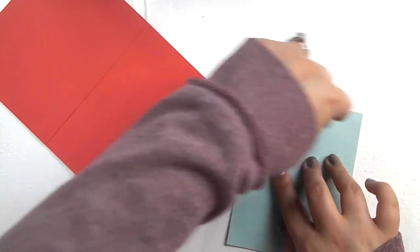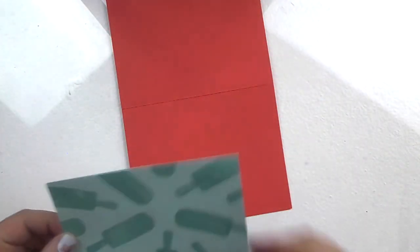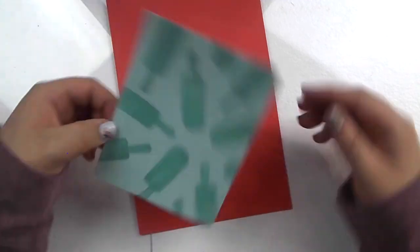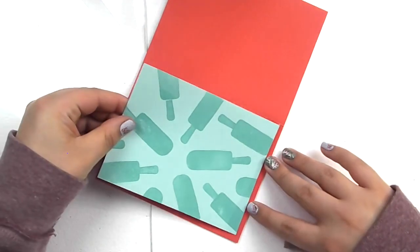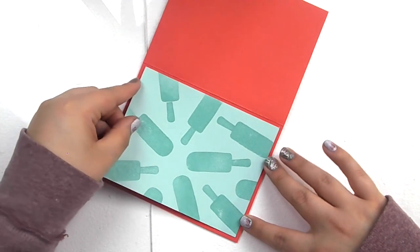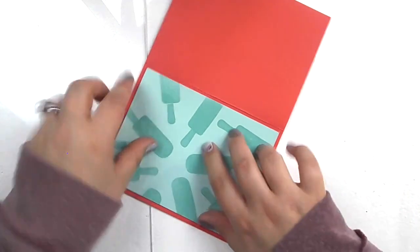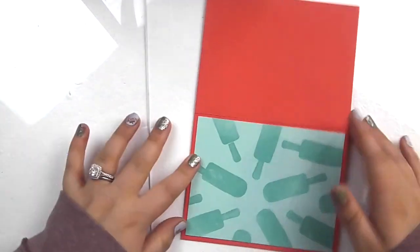So I'm just going to be using fast fuse so that I make sure that it sticks down really well. And then you just can figure out what orientation you want the piece to go and stick that down just like so.